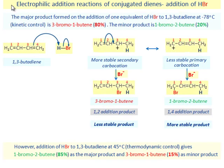Electrophilic Addition Reactions of Conjugated Dienes: Addition of HBr. The major product formed on the addition of 1 equivalent of HBr to 1,3-butadiene at minus 78 degrees C kinetic control is 3-bromo-1-butene.